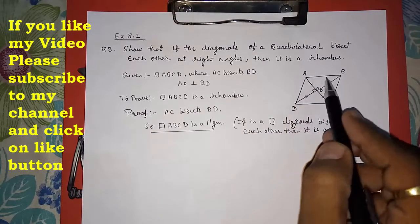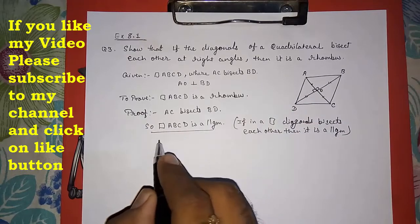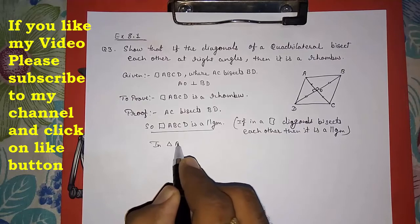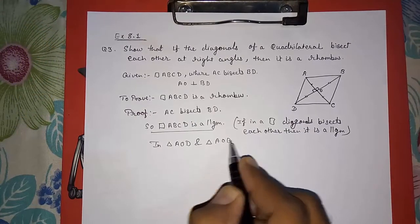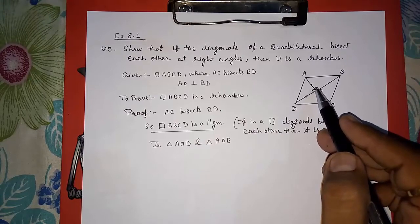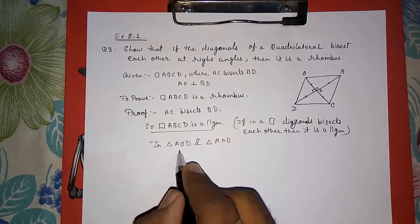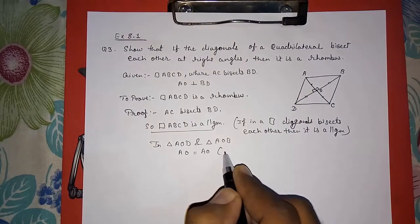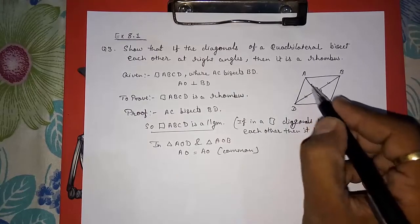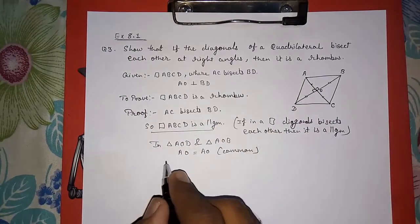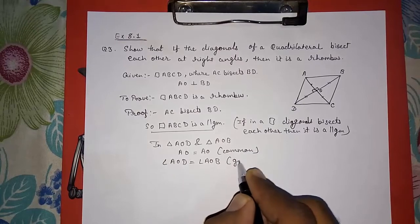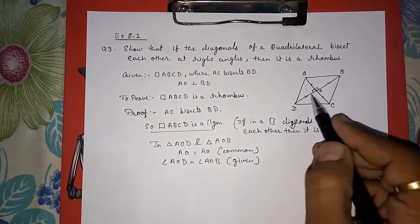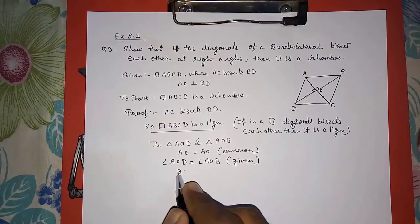Now that we know it is a parallelogram, we need to prove that its adjacent sides are also equal. For that, I select two triangles: triangle AOD and triangle AOB. To prove them congruent: AO is equal to AO (common), and angle AOD equals angle AOB since AO is perpendicular to BD, both being right angles.